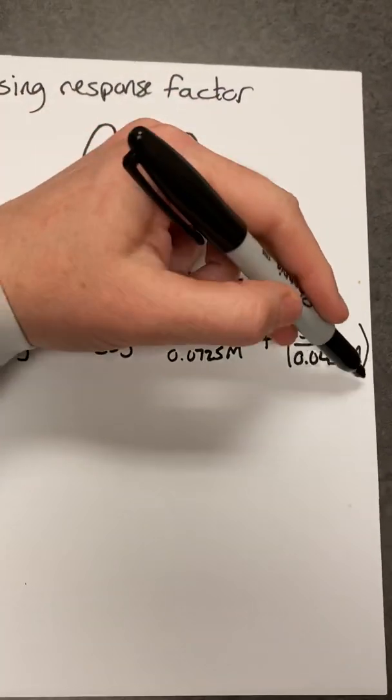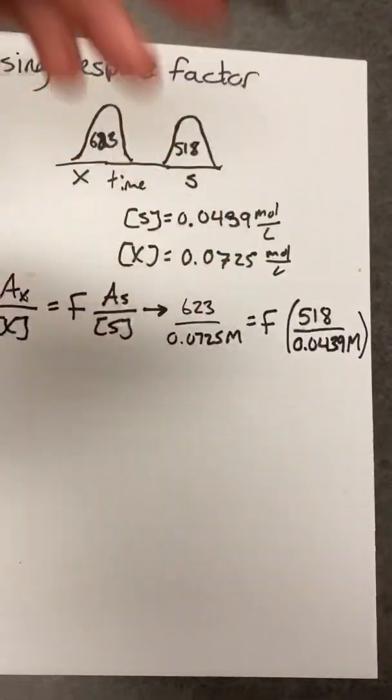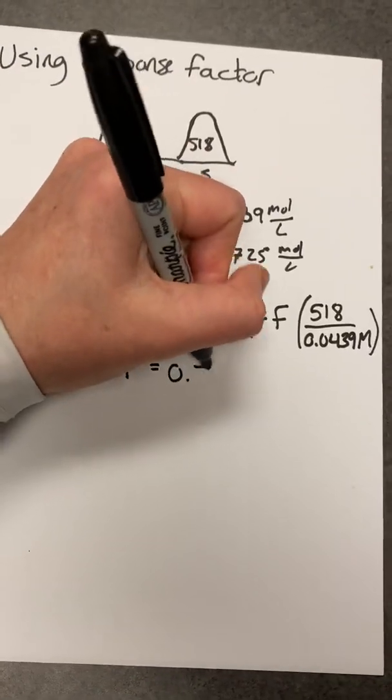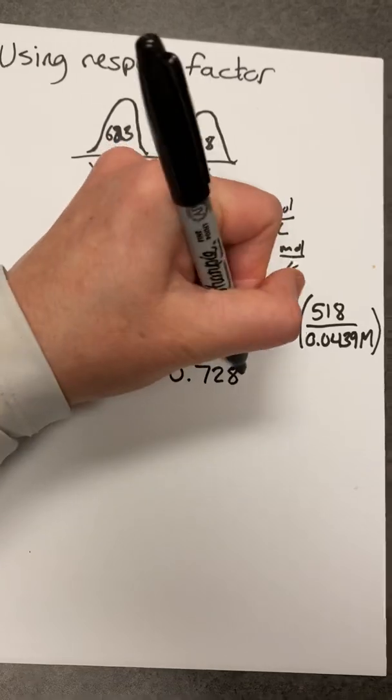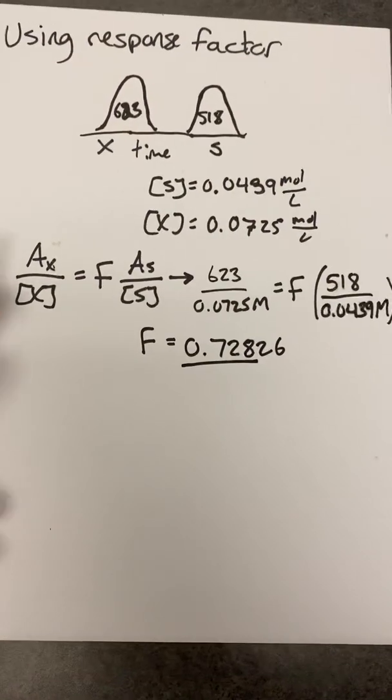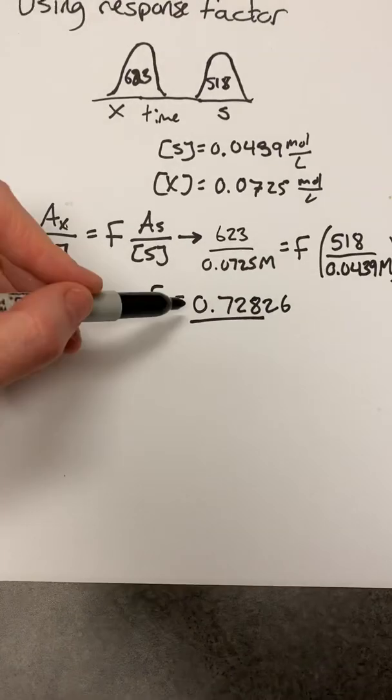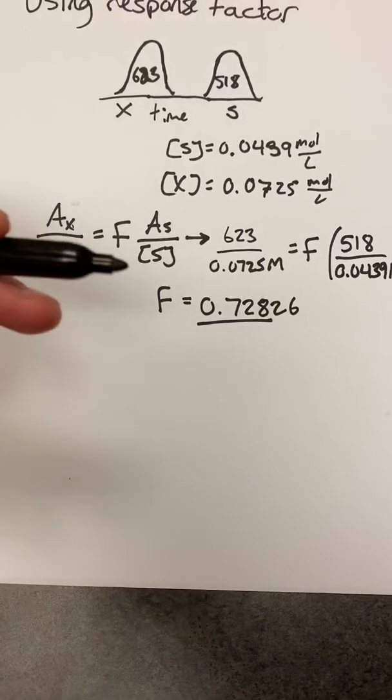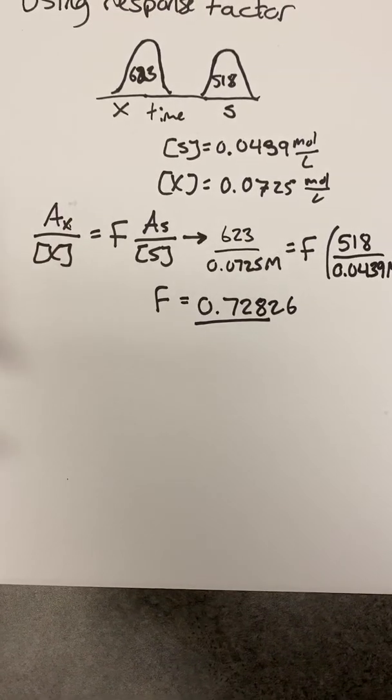And if you divide both sides by this quotient here, you will find out that F is equal to 0.72826. And it would have three sig figs and be unitless as well. So this is our response factor. Essentially, it's almost a decimal percent saying, hey, 73% is the relationship between the two.